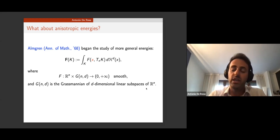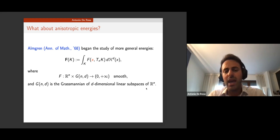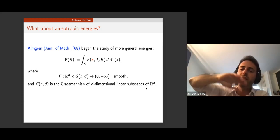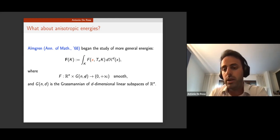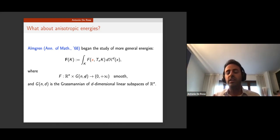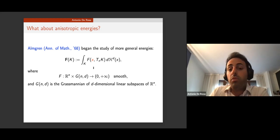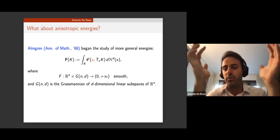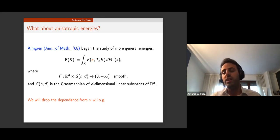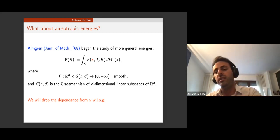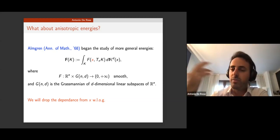Anisotropic energies were introduced long ago in material science and in geometric measure theory were first studied by Almgren in the 1960s. They are obtained by integrating over a surface an integrand F which depends on the point x and the tangent space of the surface at that point. F is a function defined on the Grassmannian bundle R^n times the d-dimensional Grassmannian — the set of d-dimensional linear subspaces of R^n.